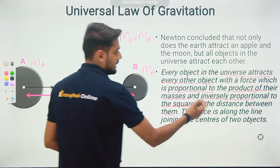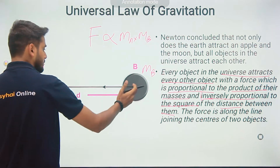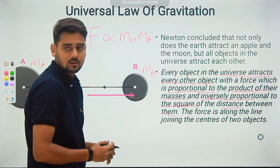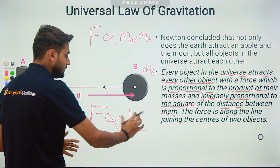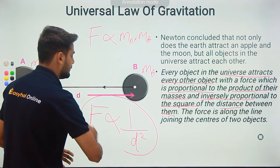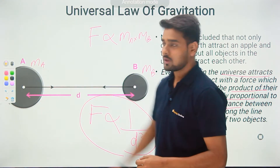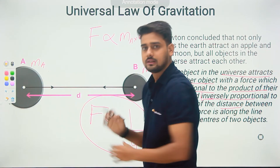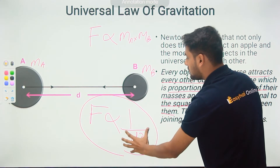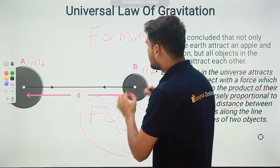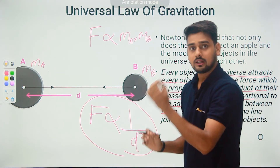The force is also inversely proportional to the square of the distance between the two masses. So F is inversely proportional to d squared. This means if there are any two objects — mass m_a and mass m_b — separated by some distance d, they will experience a force that is directly proportional to the product of both masses and inversely proportional to the square of the distance. This is Newton's universal law of gravitation.